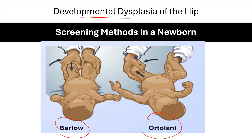The best screening method for DDH is Barlow and Ortolani maneuvers during the neonatal period, up to 2 to 3 months. You hold the thigh with the thumb inside and four fingers outside over the greater trochanter, gently. Barlow tries to dislocate the femoral head out of the hip socket — if positive, you feel a clunk and the head coming out. Ortolani is performed after, holding the thigh in abduction, trying to relocate the femoral head back into the socket — if you feel the clunk and the head returning, this is positive for DDH.